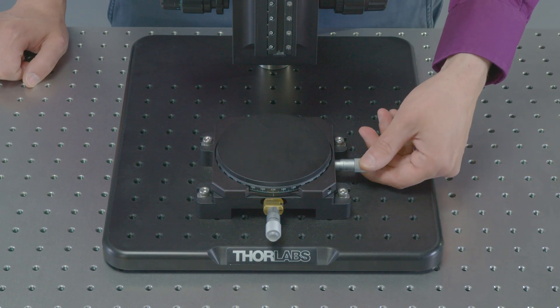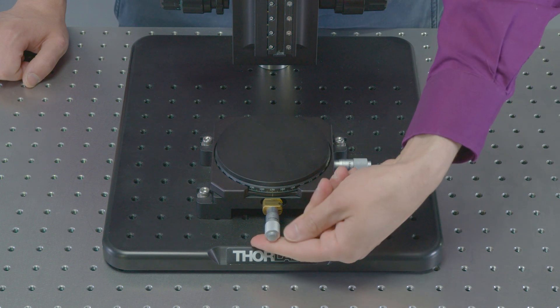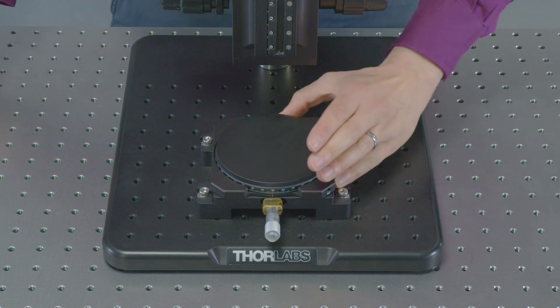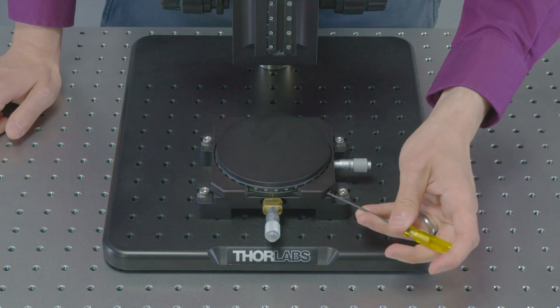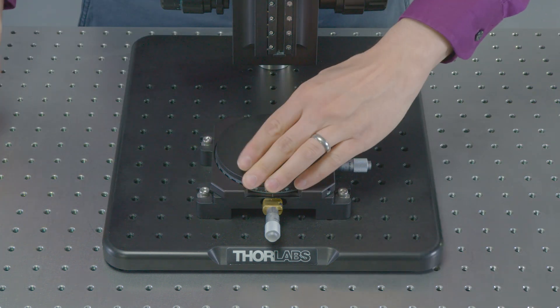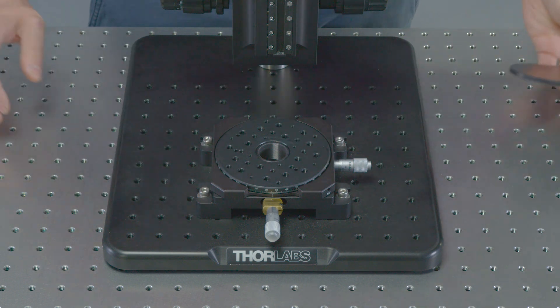The translation stage allows for translation in the x and y axes plus rotation. When rotating the top plate, you can use the angular orientation scale and fix the position by tightening the locking screw. Remove the solid top plate to find additional tapped holes for flexible sample alignment.